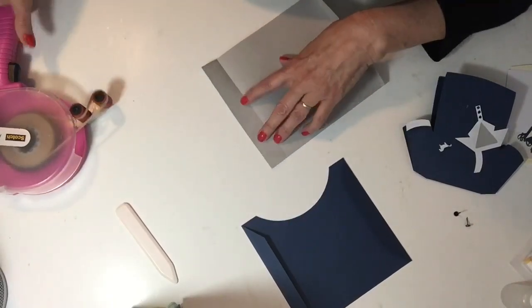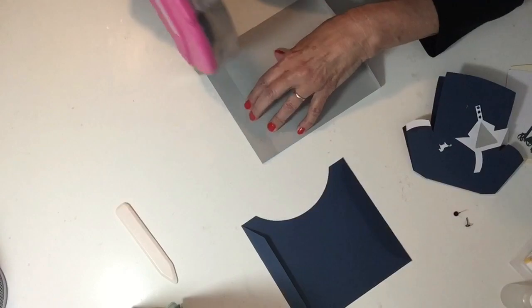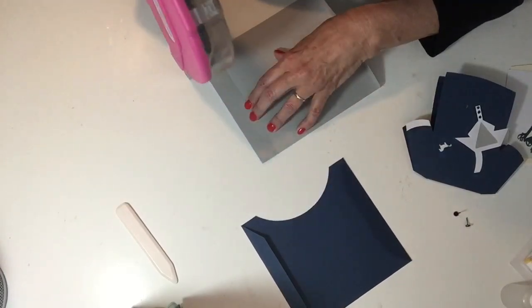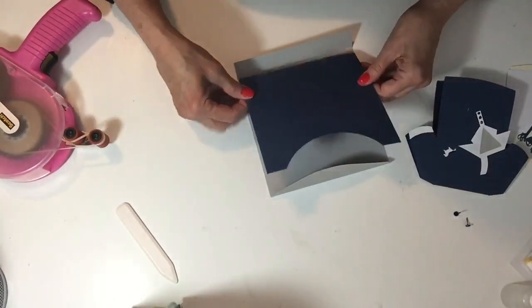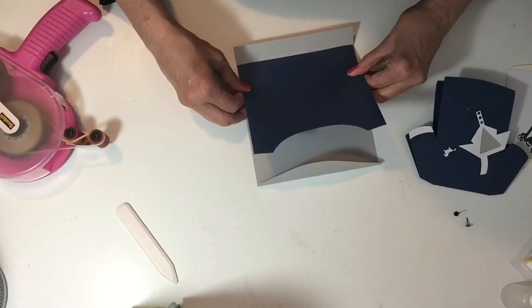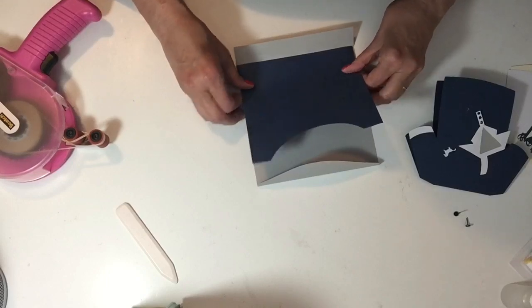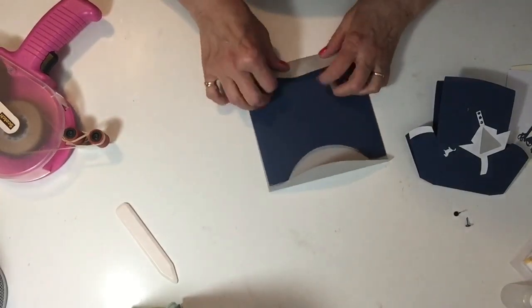I'm going to put some tape runner along this bottom edge to attach it to the second piece. Then I'm just going to place this right along the score line, make sure it's straight and pull the score line up.